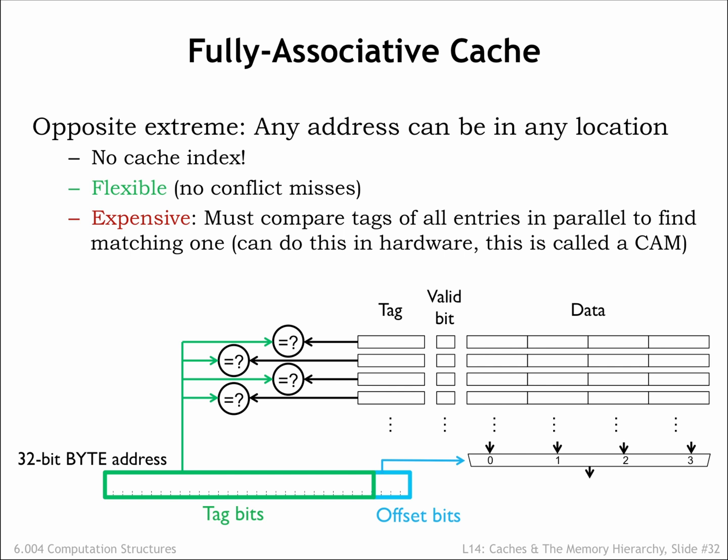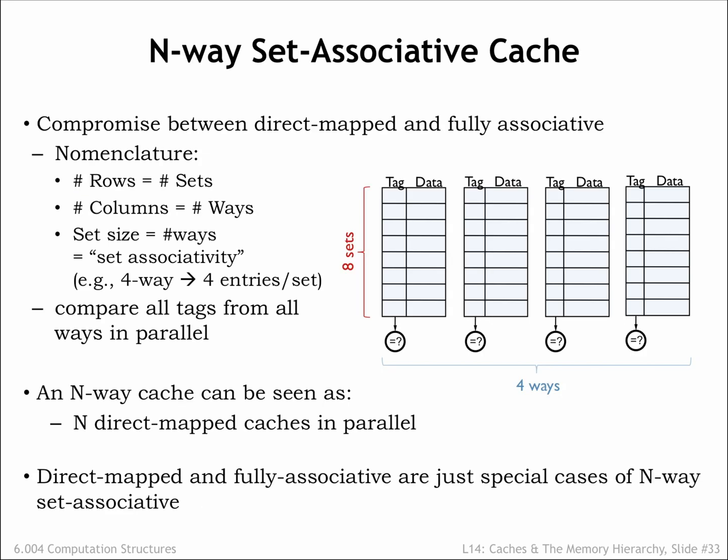Direct mapped caches search only a single cache line. Fully associative caches search all cache lines. Is there a happy middle ground where some small number of cache lines are searched in parallel? Yes! If you look closely at the diagram of the fully associative cache shown here, you'll see it looks like four one-line direct mapped caches operating in parallel. What would happen if we designed a cache with four multi-line direct mapped caches operating in parallel? The result would be what we call a four-way set associative cache.